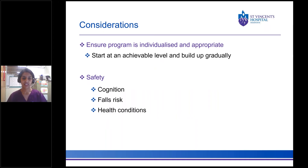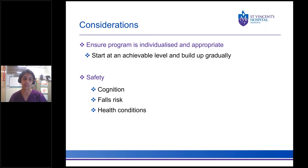It's really important to start at an achievable level and build up gradually, ensuring the program is individualised and appropriate for you and your abilities at that time. Some safety considerations, particularly for those running classes, include the cognition of an individual and whether they are a falls risk — it may mean modifying exercises from standing to sitting, or providing extra supervision or assistance. It's also important to consider any health conditions someone has, or post-operative restrictions after particular types of surgery.